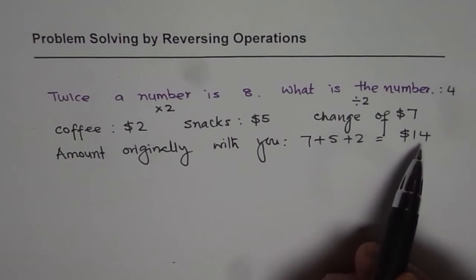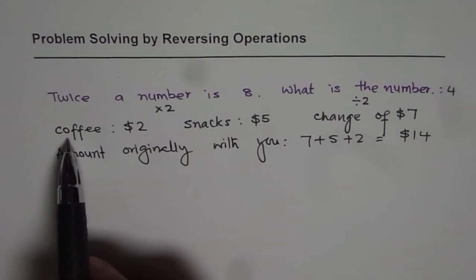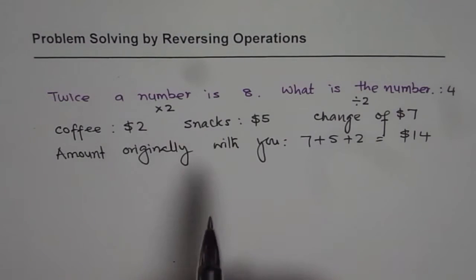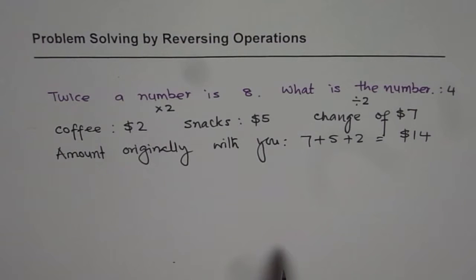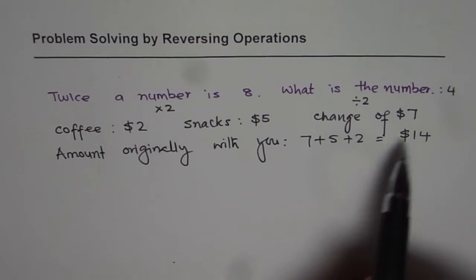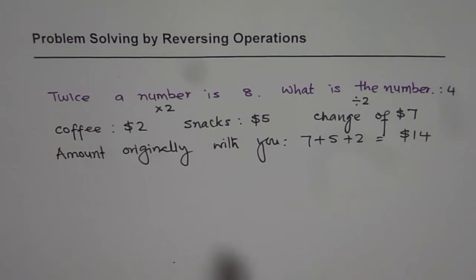If you start with 14 dollars, you could afford to buy a coffee of 2 dollars, snacks of 5 dollars and you still have 7 dollars left in your pocket. So, we found the original amount by reversing the operation.